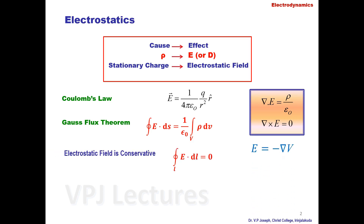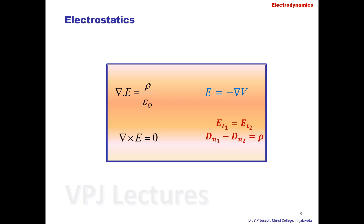The conservative nature of the electrostatic field — that is, the line integral of E dot dl equals zero — is represented by the curl equation del cross E equals zero. We considered two helping tools: potential formulation and boundary conditions. In potential formulation, the relation between the electrostatic field and scalar potential V is E equals minus del V. The static field equations are del dot E equals rho over epsilon zero, and del cross E equals zero.